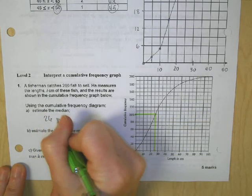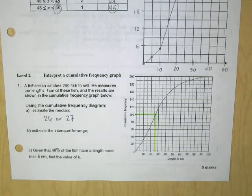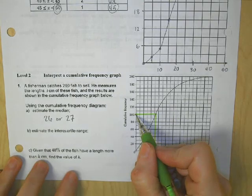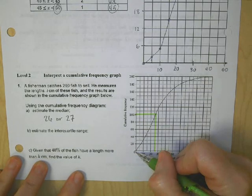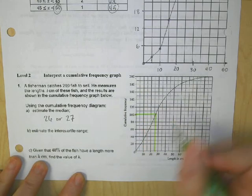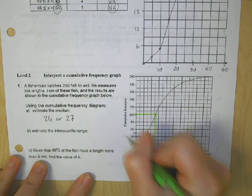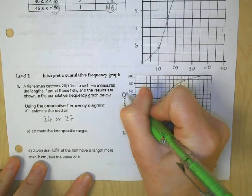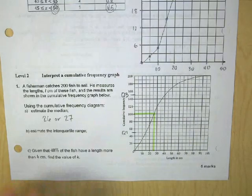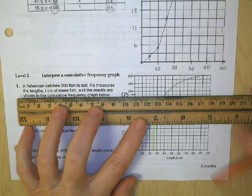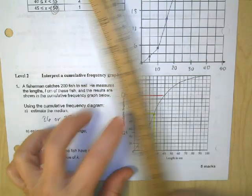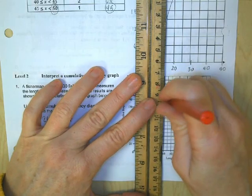Either 26 or 27 is fine — these answers are fairly approximate. Now estimate the interquartile range. For that I need Q1 and Q3. Dividing 200 fish into quartiles means every 50th fish is a quartile boundary. Q1 is at 50, Q2 at 100, Q3 at 150. Tracing Q3 across and down, it looks like Q3 is directly on 40.